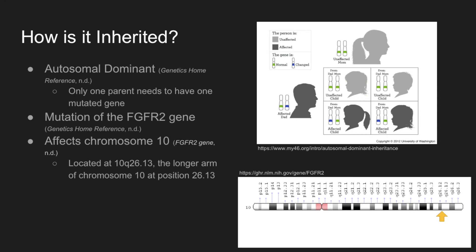The specific location is 10q26.13 on the longer arm of chromosome number 10, at position 26.13. The top picture on the right is a Punnett square showing the children of two parents — one who has one gene with the mutation for Jackson-Weiss Syndrome, and the other who is completely recessive. Between these two parents, it is shown that 50% of the children, two of the four, would be born with Jackson-Weiss Syndrome, due to it being autosomal dominant. The second image is an example of the place on the chromosome where the mutation can be found.